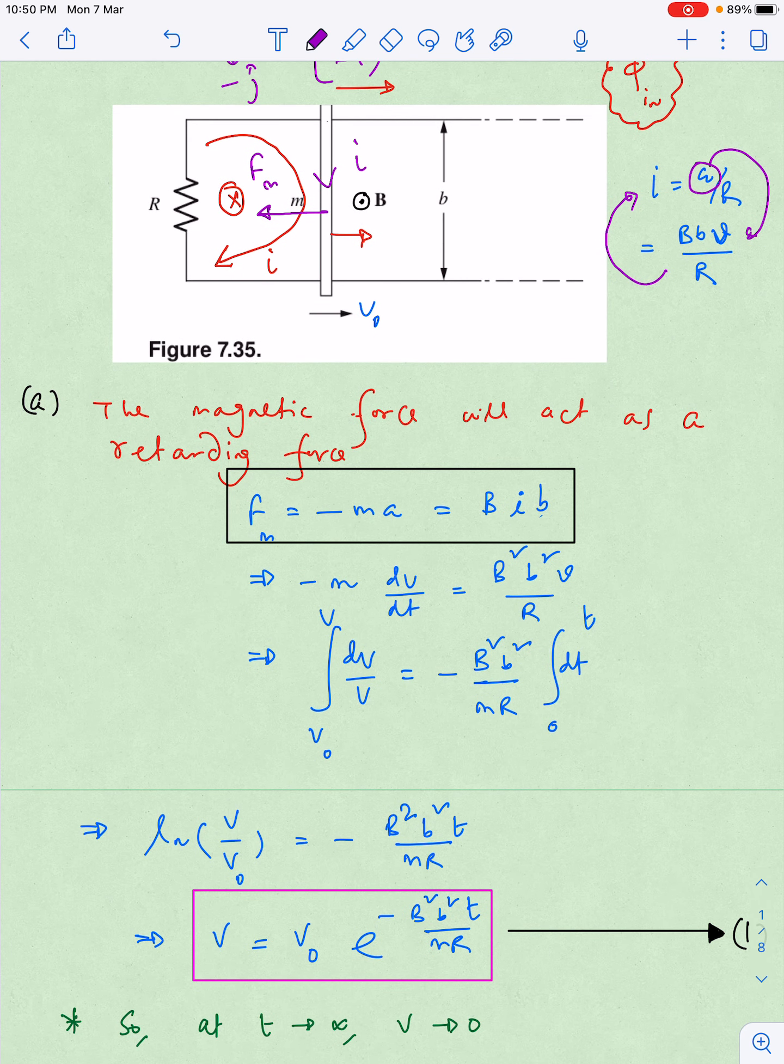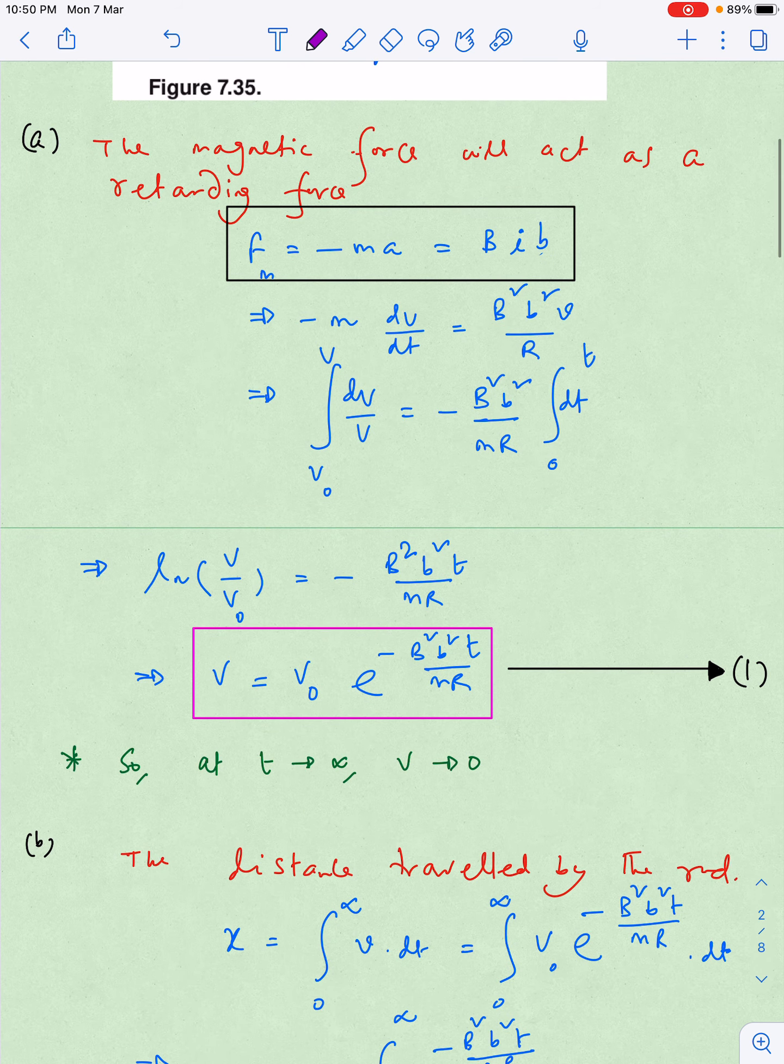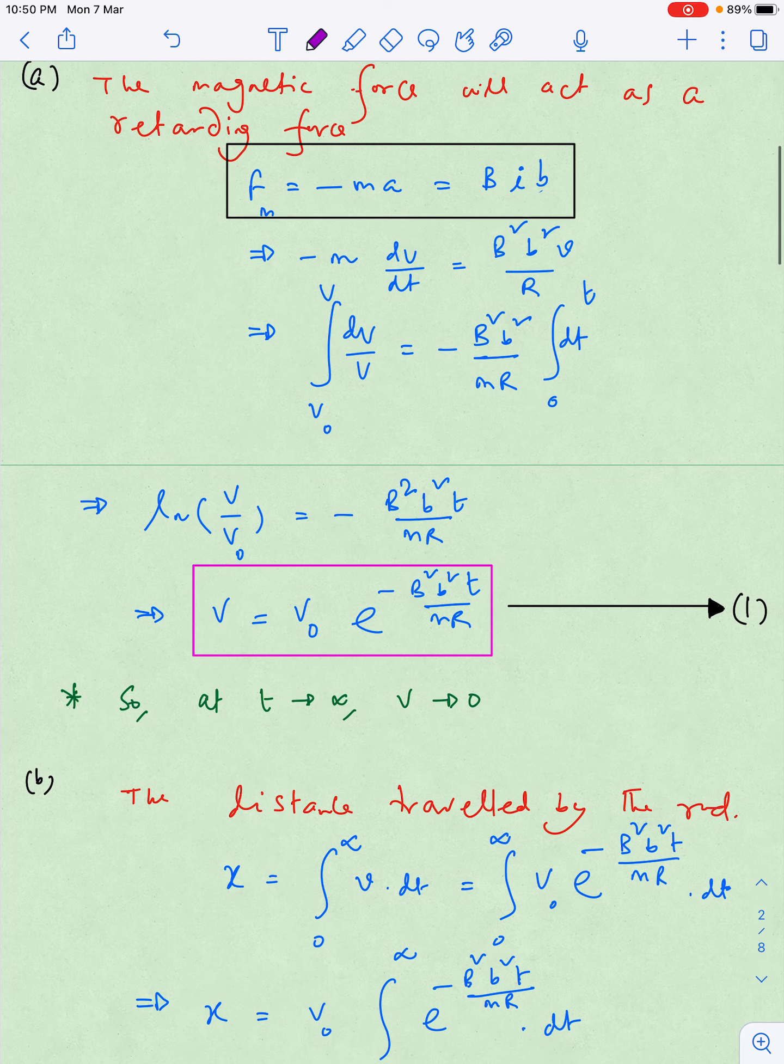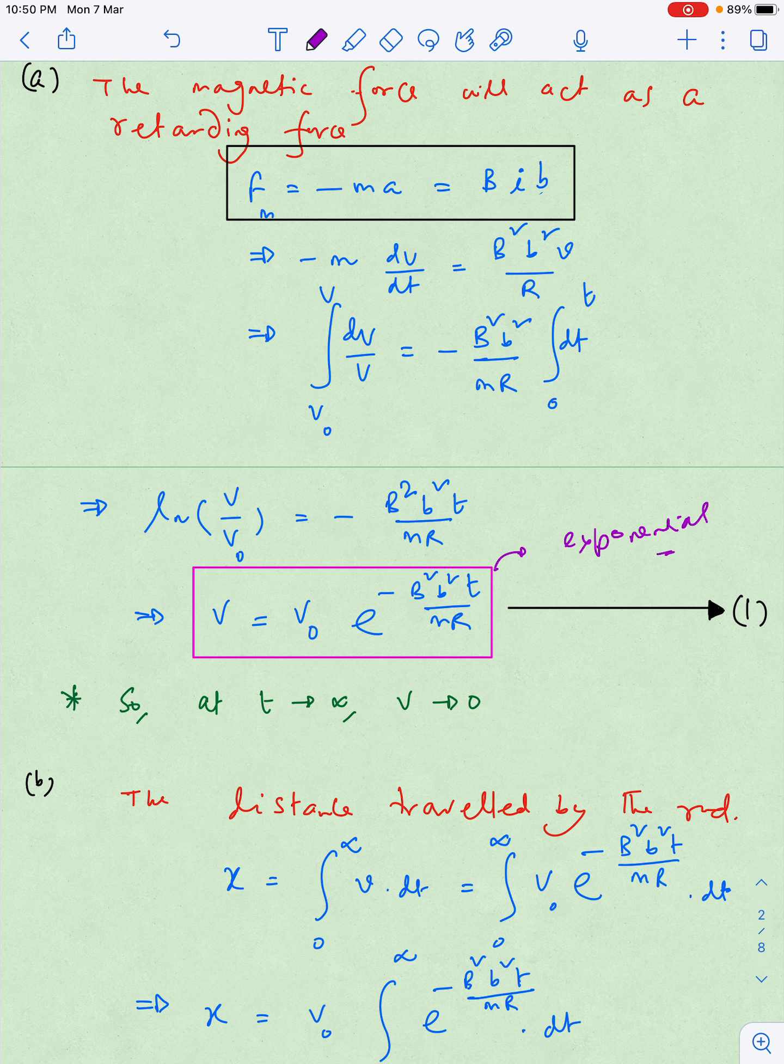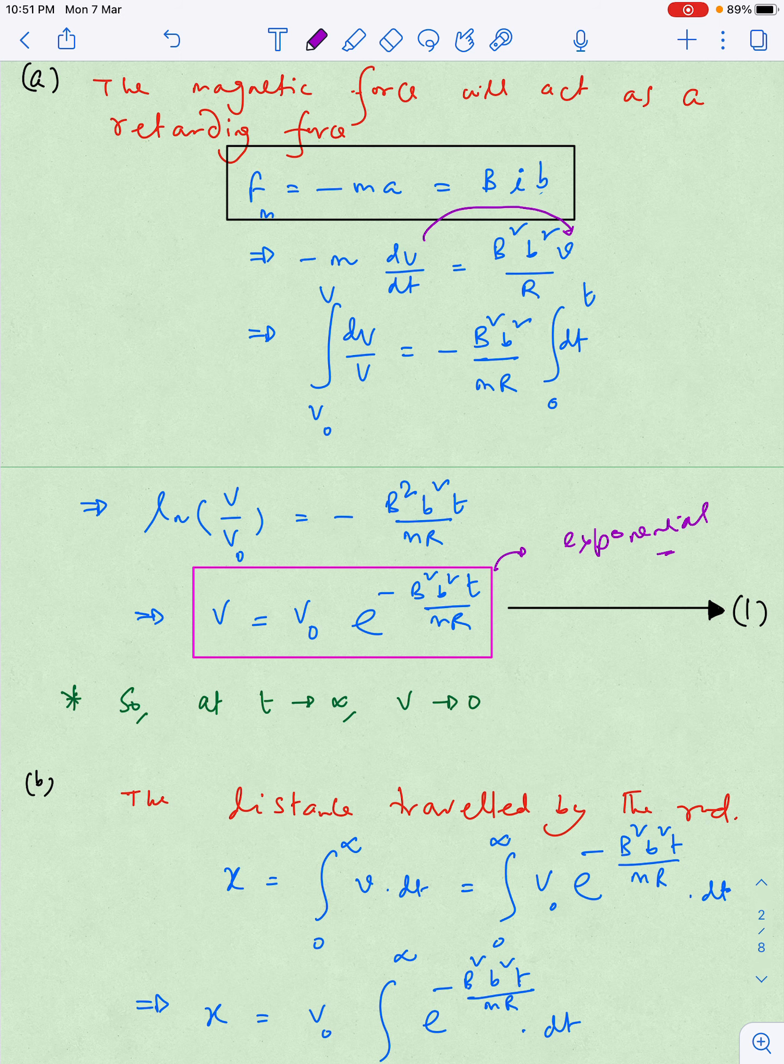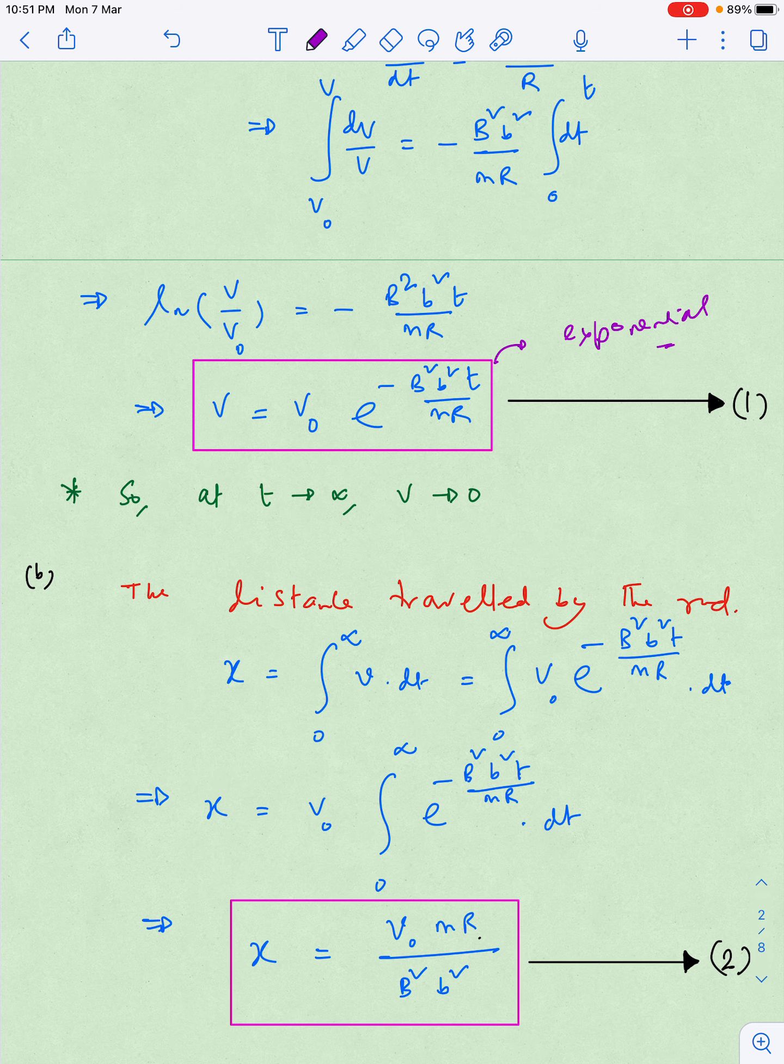We have already seen that the force is basically acting as a resistive force, so I will write F_m is equal to minus m a. Minus sign is to interpret resisting the motion. So then small calculation I will take the limit from v naught to v and I will get v equal to v naught e to the power minus this factor. Interesting part is that this is exponential variation, which was quite obviously expected because whenever we get a velocity dependent resistive force, kind of drag force, then the velocity dilutes exponentially. So at t tends to infinity, v will be equal to zero, so the rod theoretically will come to rest after infinite span of time.